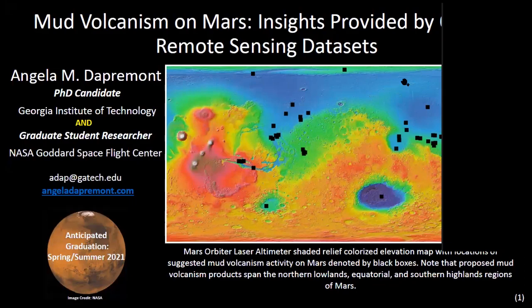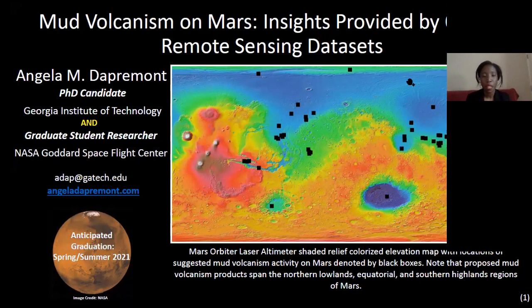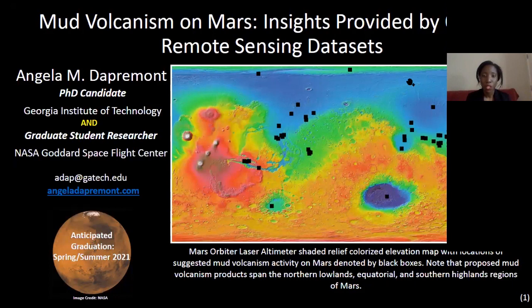Thank you to the LPI for hosting today's virtual event. My name is Angela Dapromont, and I am a PhD candidate at the Georgia Institute of Technology, as well as a graduate student researcher at NASA Goddard Space Flight Center. Today I'm going to talk about the topic of my dissertation, which I'm hoping to complete in about a year, which is mud volcanism on Mars. I've primarily been using orbital remote sensing datasets to study this process on the Martian surface. I wanted to start with a global view of Mars — a colorized elevation map — where the black squares are locations where previous workers have suggested the presence of mud volcanoes. While a lot of previous works have been valuable in communicating morphometric and morphologic characteristics of suggested mud volcanism products on Mars, I noticed that broad-scale compositional analysis seemed to be an area where more information could be added.